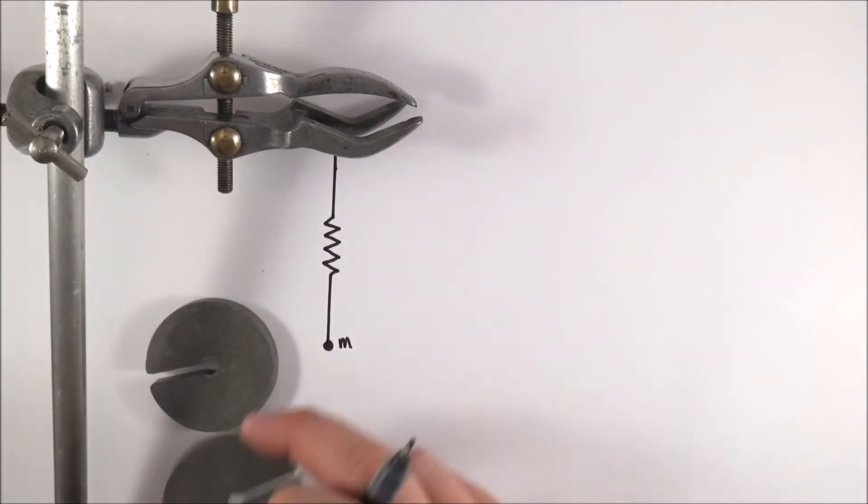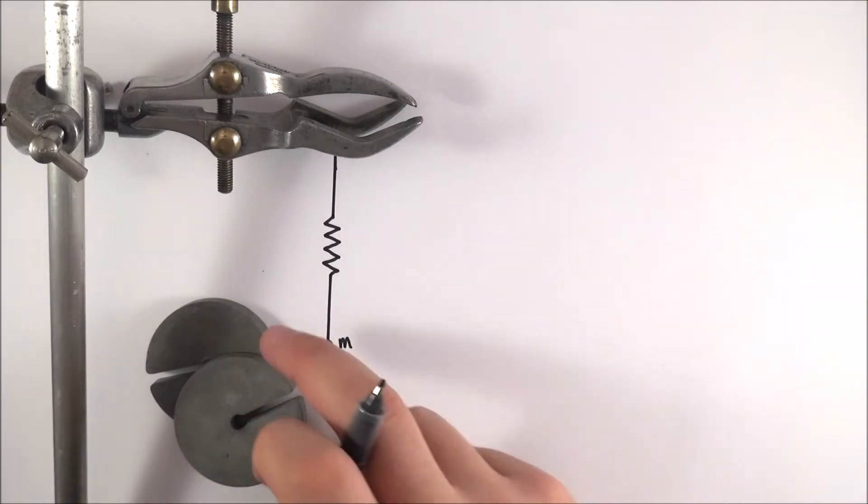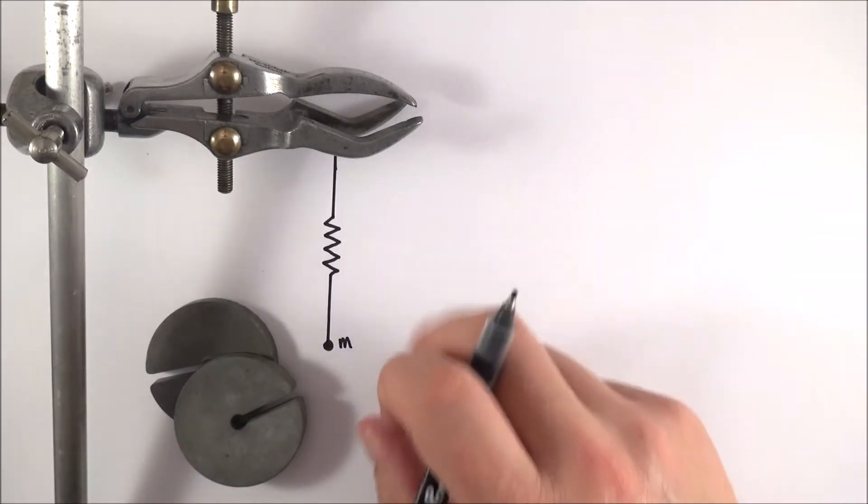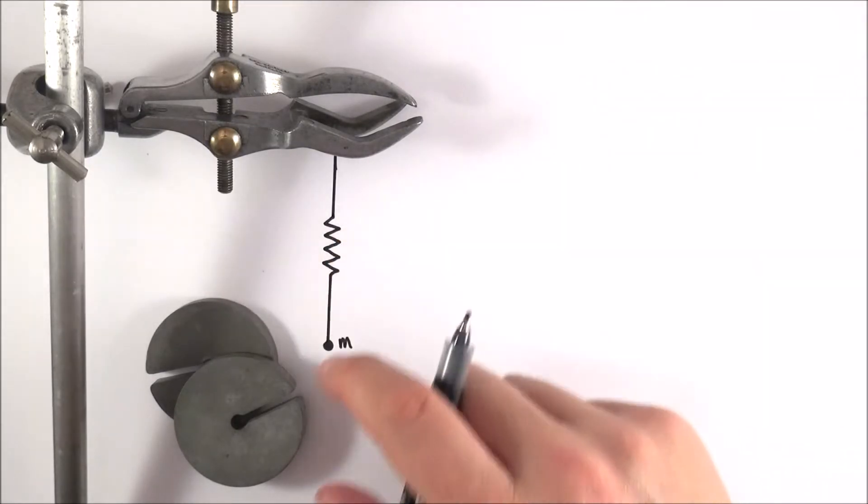And what I could do is I could change the mass, this is something I'm in control of, and as we have a different mass we could then see how that affects the time for one oscillation of this spring mass system.